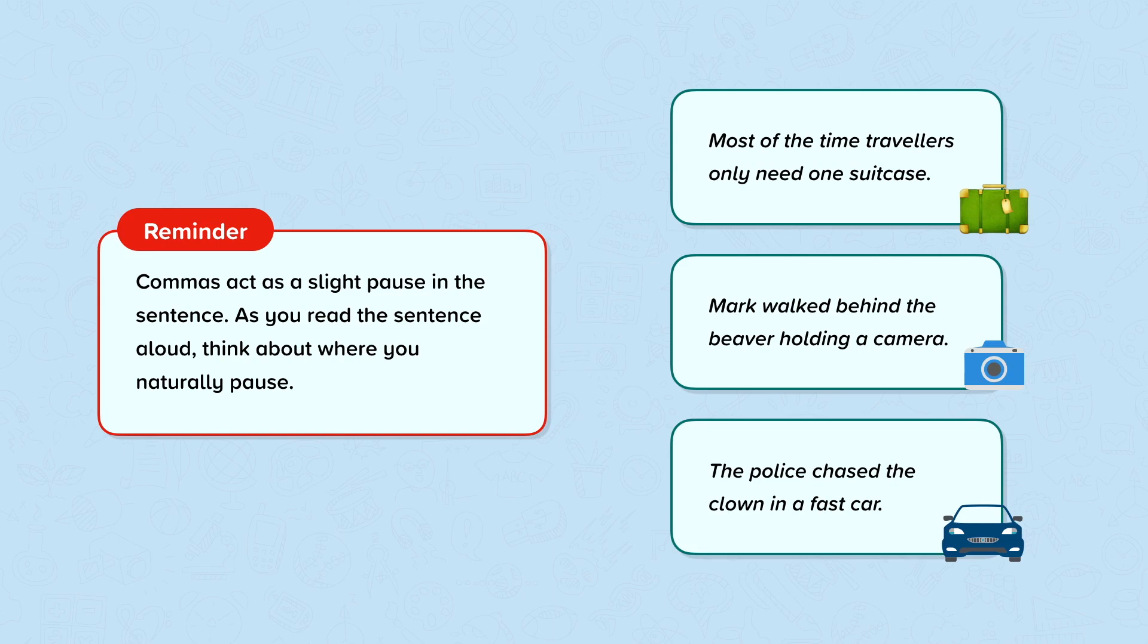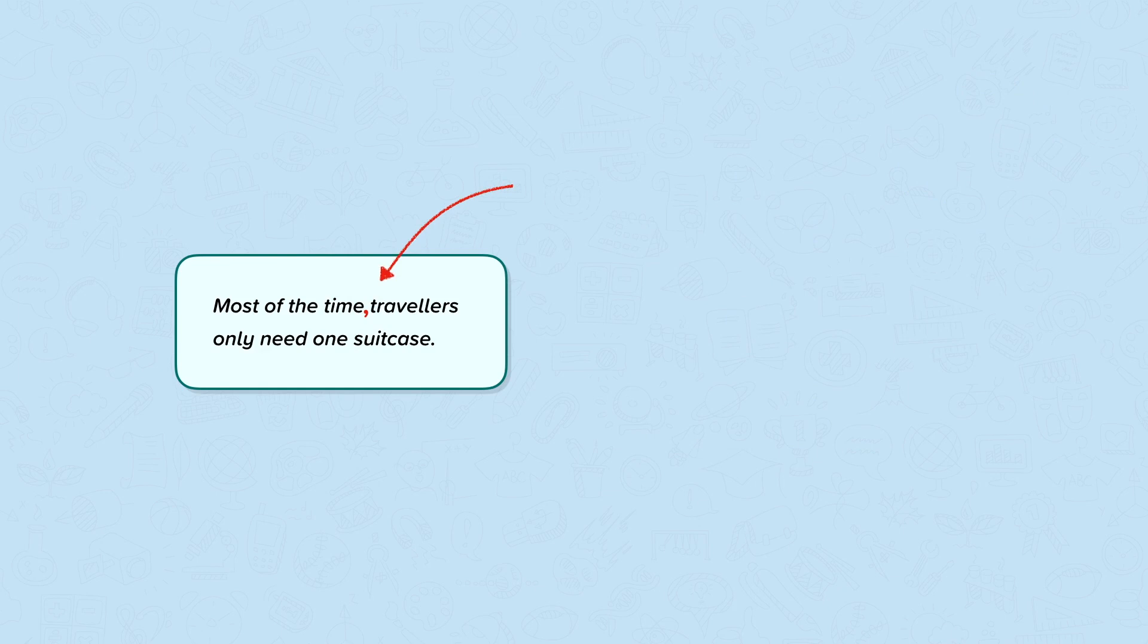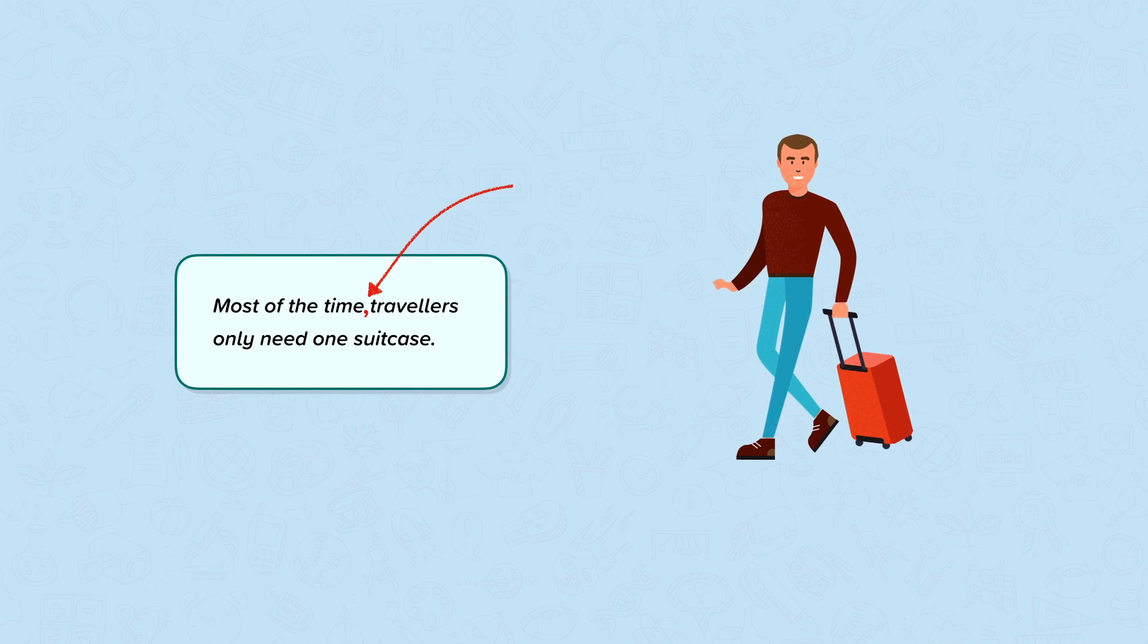Let's look at our first sentence: Most of the time travellers only need one suitcase. Without a comma, this sentence suggests that it is time travellers who only need one suitcase. The comma placed here makes it clear that it is travellers who only need one suitcase most of the time. Most of the time, travellers only need one suitcase.